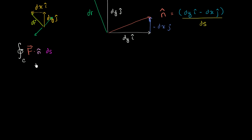We'll use Green's theorem, and we're going to actually come up with a two-dimensional version of the divergence theorem, which all sounds very complicated, but hopefully we can get a little bit of intuition for it as to why it is actually a little bit of common sense.